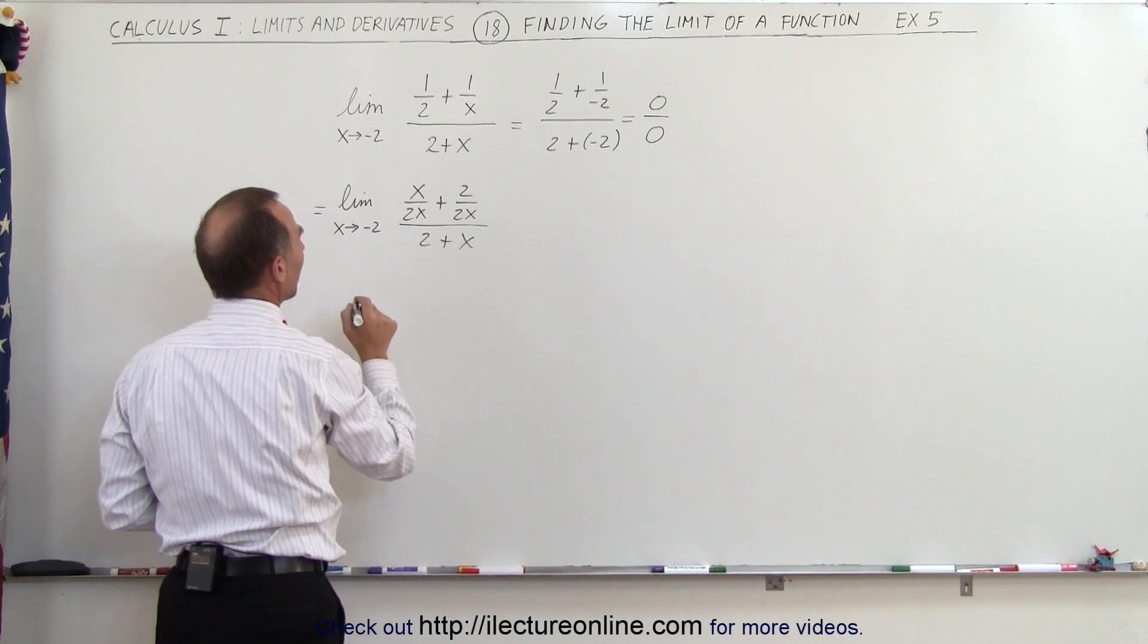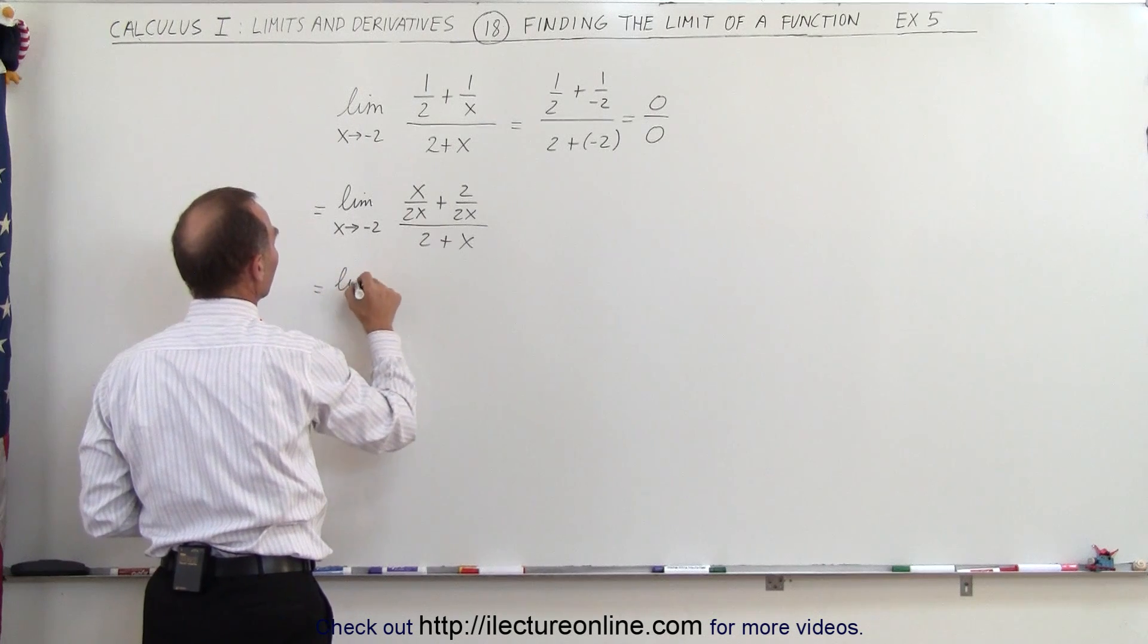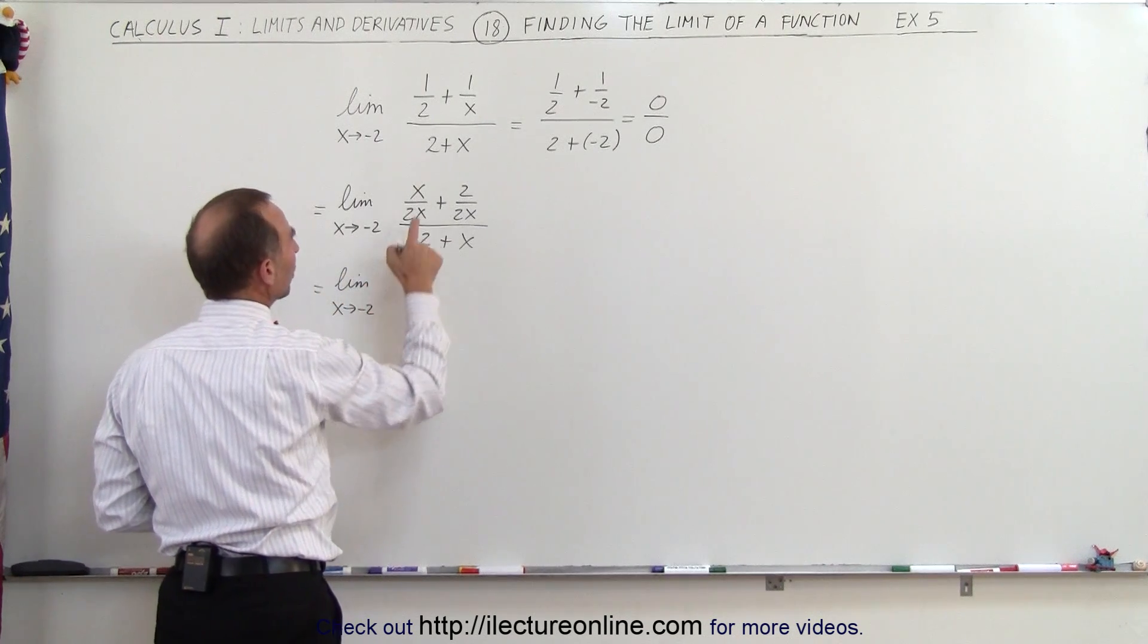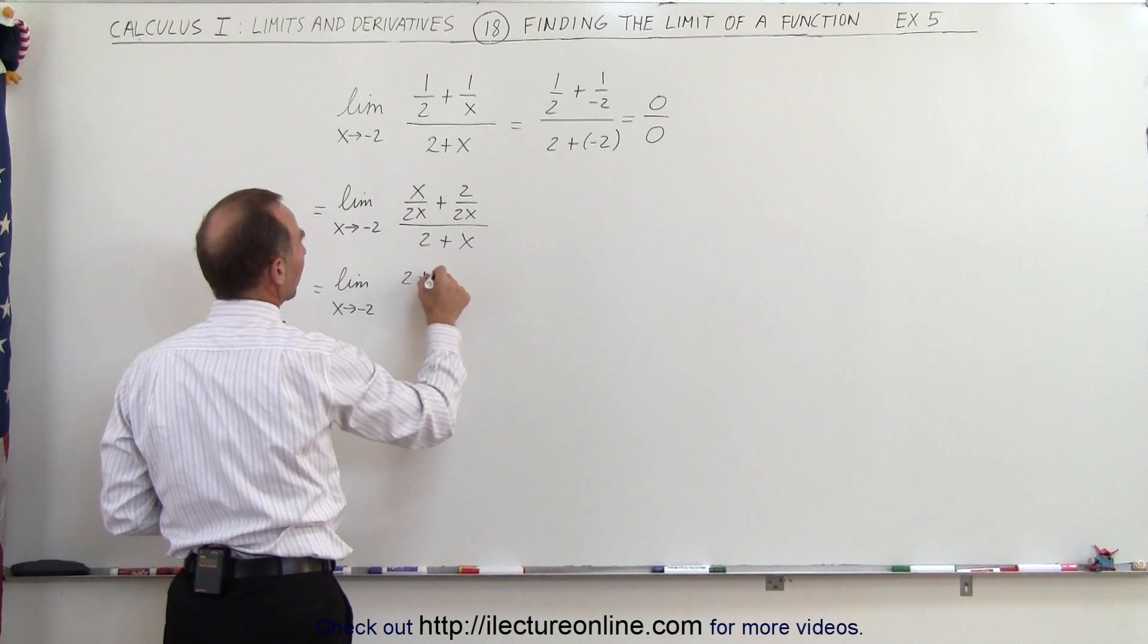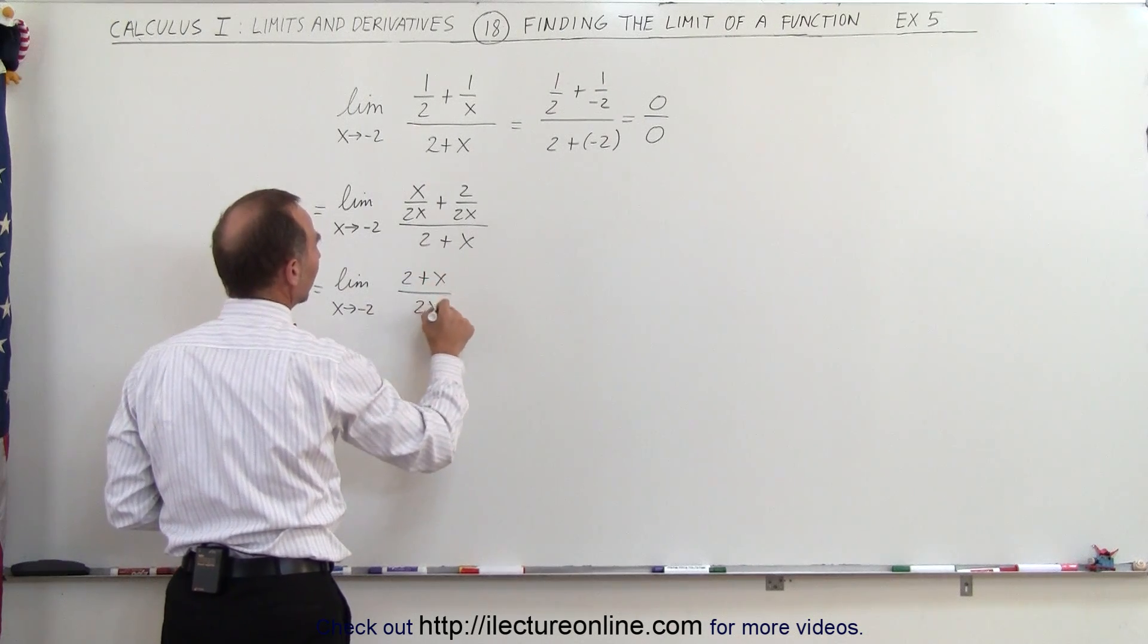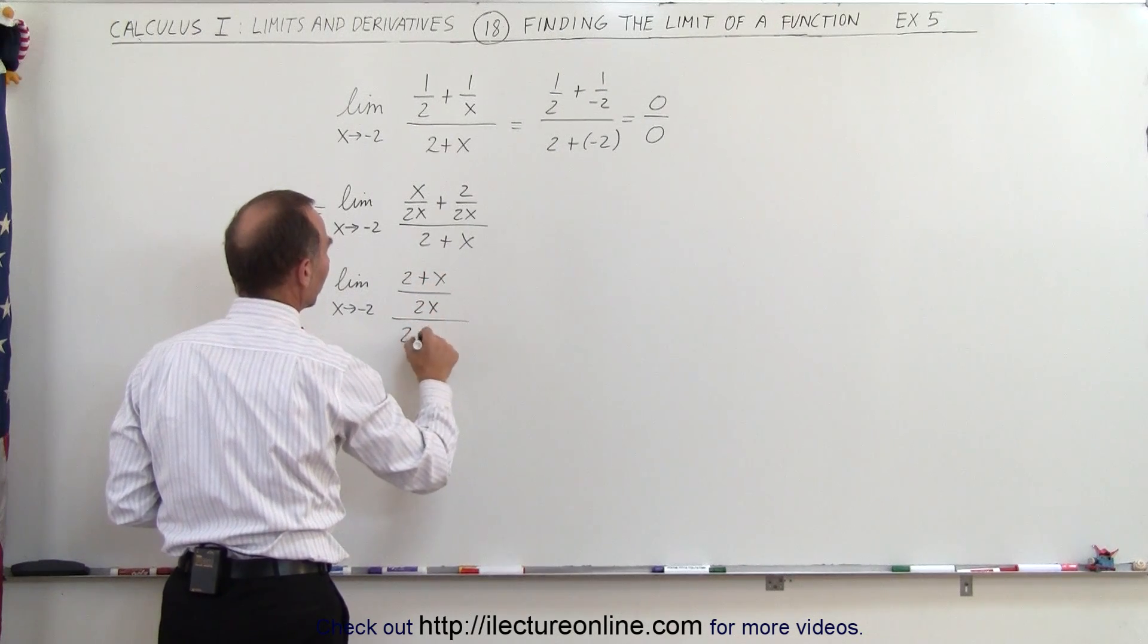And so now we have a common denominator so this can be written as the limit as x approaches negative 2. So this becomes 2 plus x divided by 2x the whole thing divided by 2 plus x.